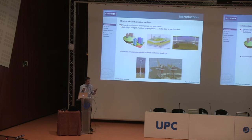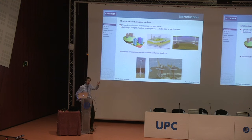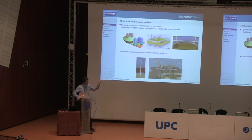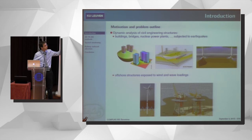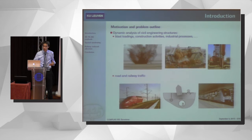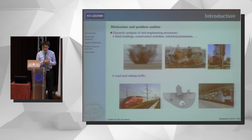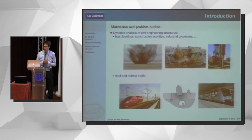Buildings, bridges, or nuclear power plants have to be designed to sustain such dynamic loads. Other examples of dynamic excitation sources are wind and wave loads, which are particularly important for the design of offshore structures such as wind turbines or oil and gas platforms. These are natural sources of vibrations, but of course there are many human activities that also lead to dynamic excitation in the built environment.